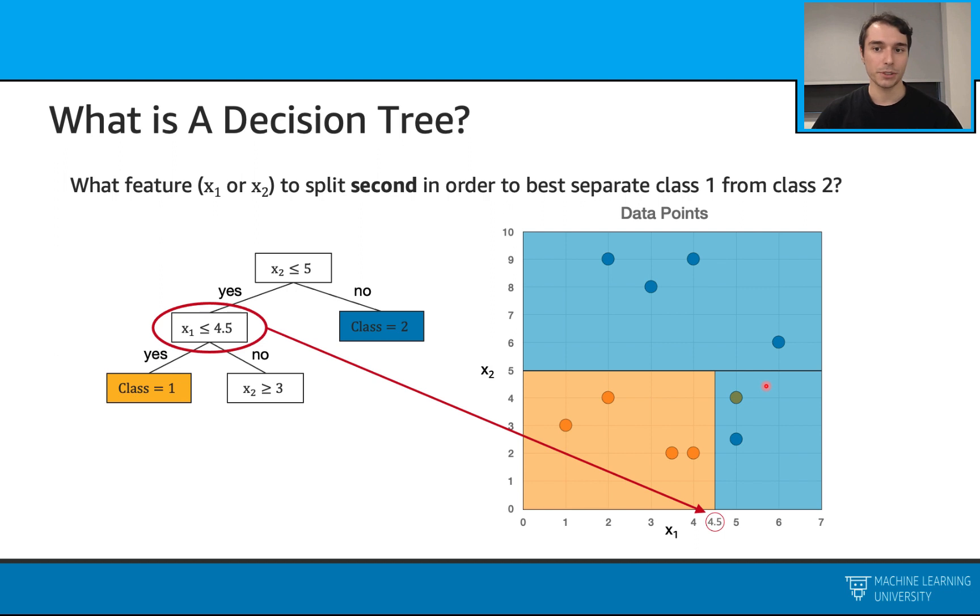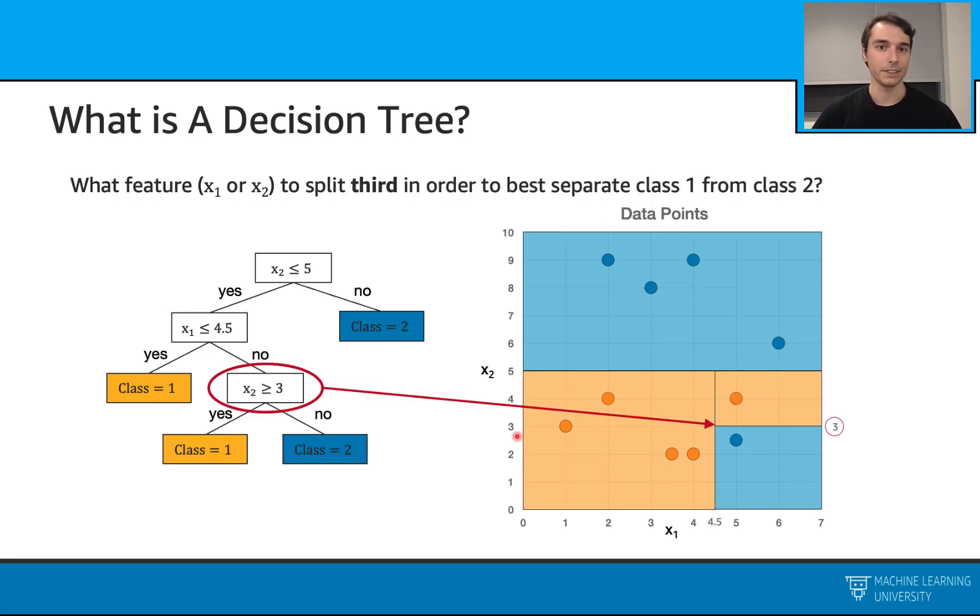Over here, when I look at the class distributions, I see that this is again pure. I will call this a leaf node. This is mixed. I will ask one more question here. Here's a question. And with this question, I can get these data points classified correctly. And overall, this is our decision tree.